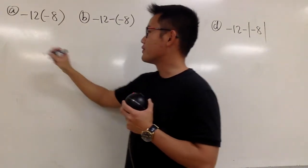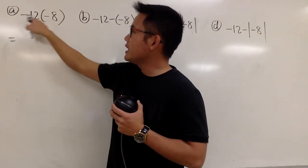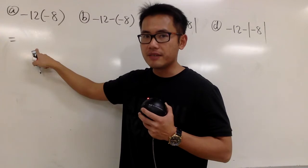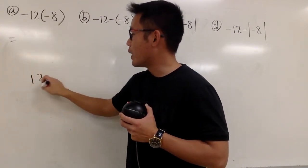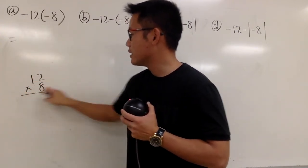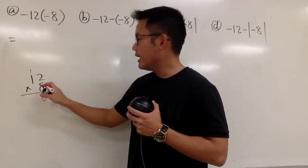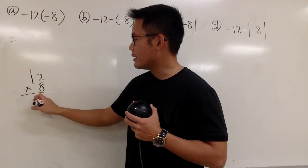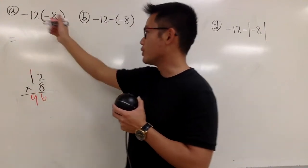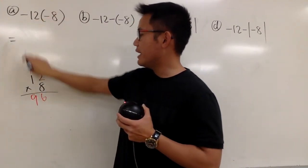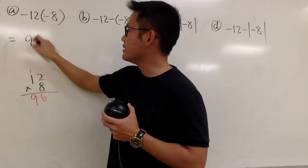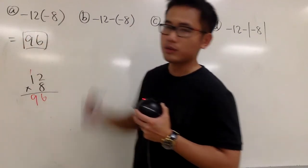We can just first work this out. Negative times negative gives us positive, right? And then we can work this out: 12 times 8. 8 times 2 is 16, and 8 times 1 is 8, plus 1 is 9. It's positive, and the answer right here is 96. And this is the first one.